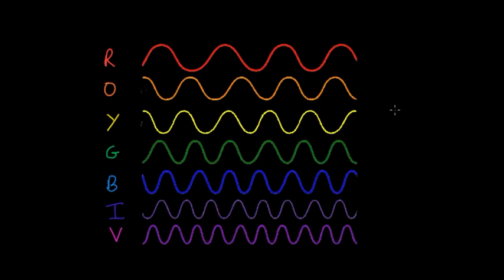Visible light, just like all other parts of the electromagnetic spectrum, is a wave. The different colors represent waves which have different wavelengths.